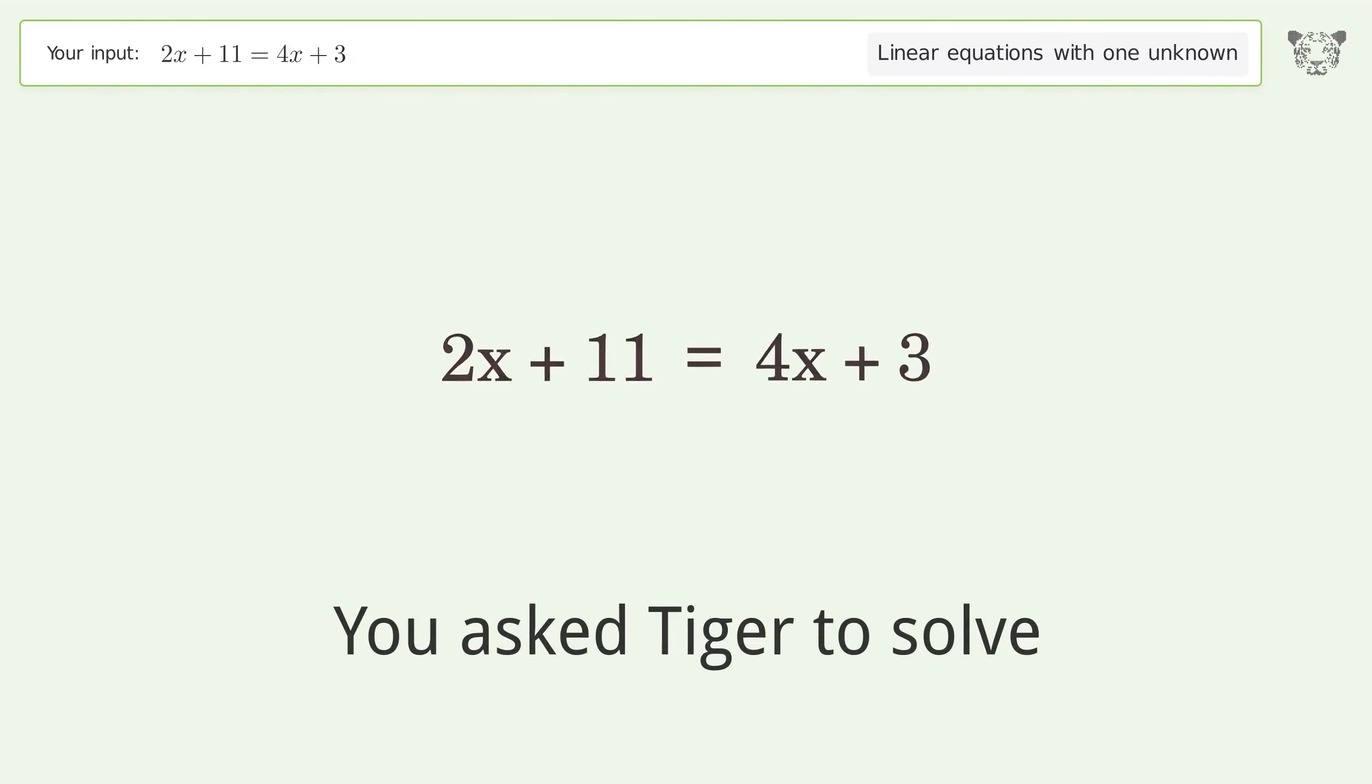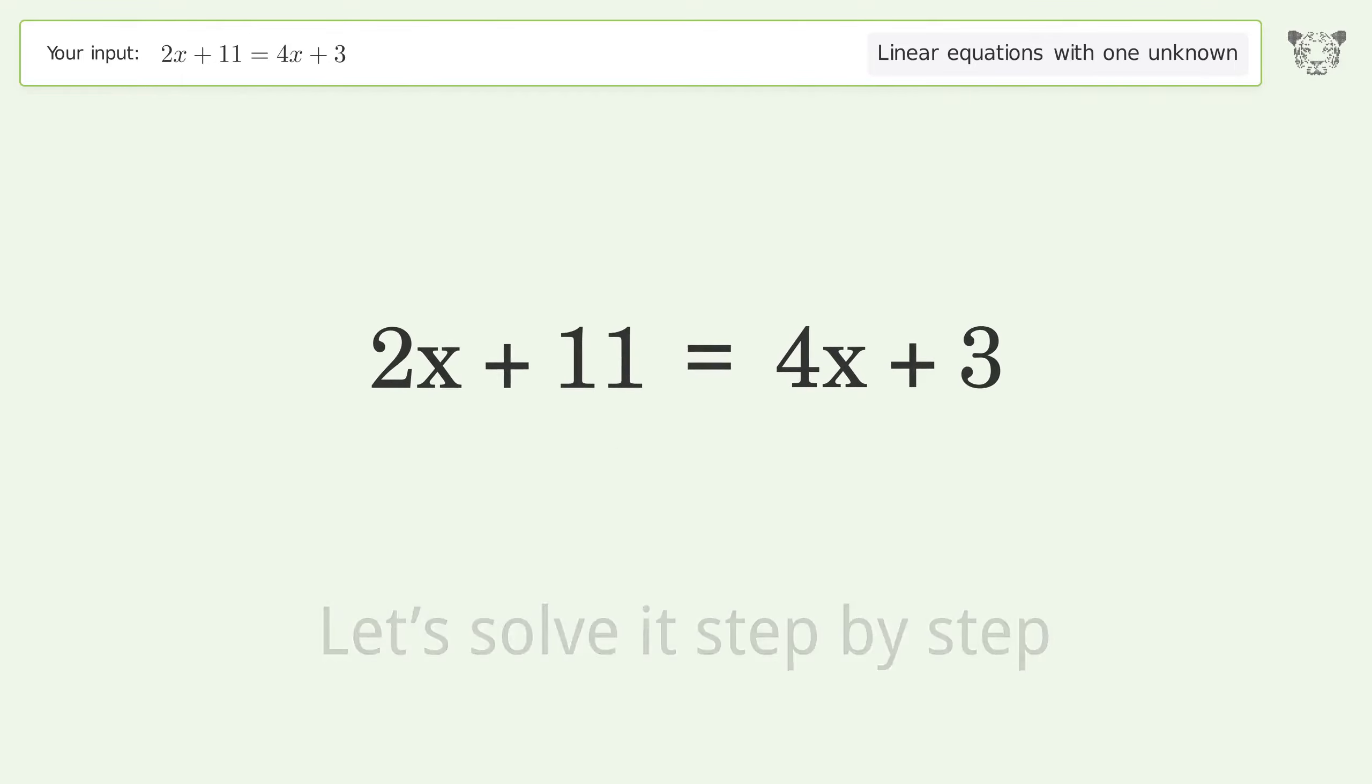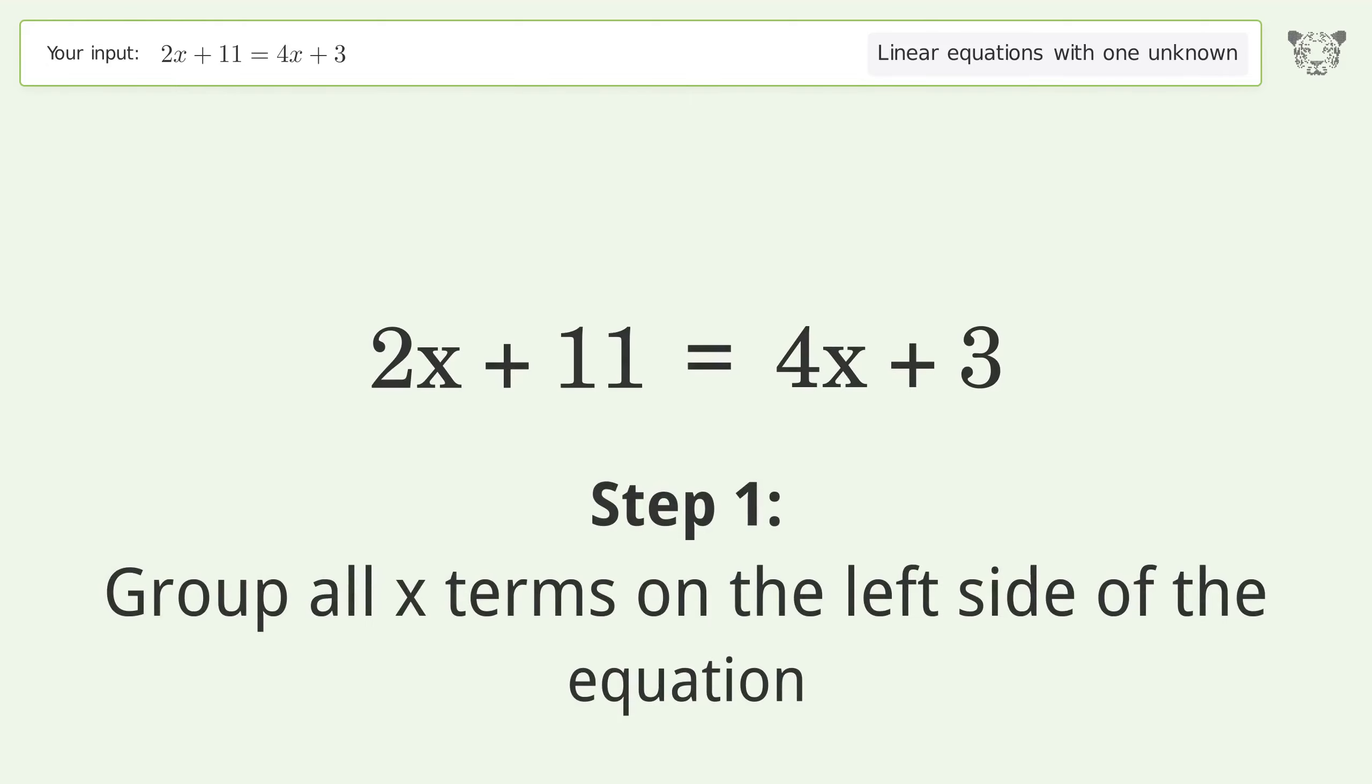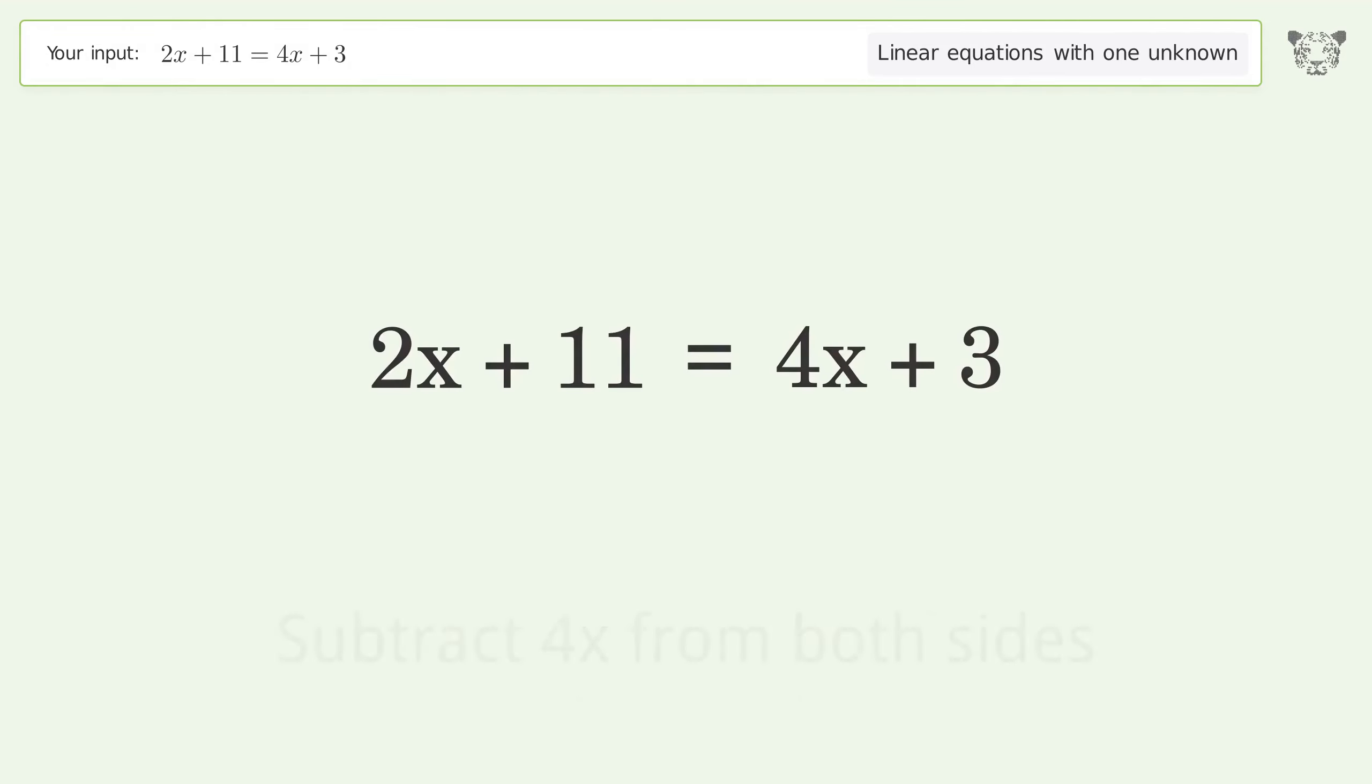You asked Tiger to solve this. This deals with linear equations with one unknown. The final result is x equals 4. Let's solve it step by step. Group all x terms on the left side of the equation. Subtract 4x from both sides.